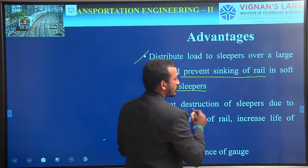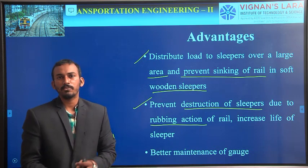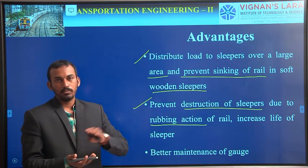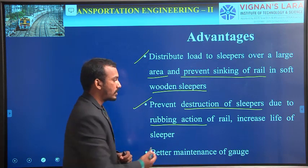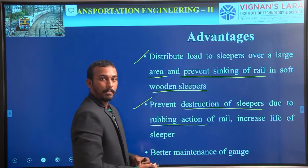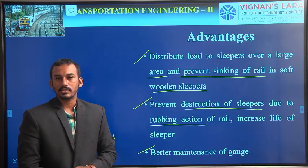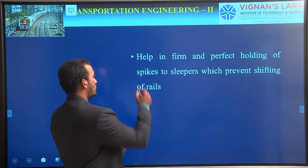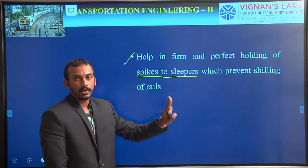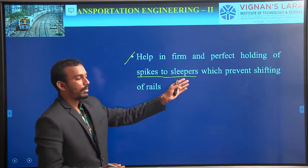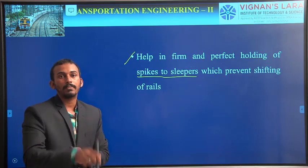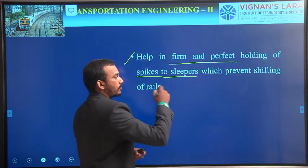They also prevent the destruction of sleepers due to rubbing action. If we do not provide any bearing plates and keep the rails straight on a sleeper, while the train is moving there is a chance of rubbing action, and due to this rubbing action the sleeper may get destroyed. So to prevent the destruction of sleepers we use bearing plates. They are also useful for better maintenance of gauge. And the last advantage is they help in firm and perfect holding of spikes to sleepers — if we do not provide bearing plates, we just insert the spikes into the sleepers, which may not be perfectly firm. But if we use bearing plates, we insert the spikes through the bearing plate holes, which provides firm and perfect holding of spikes to the sleepers, preventing shifting of rails.